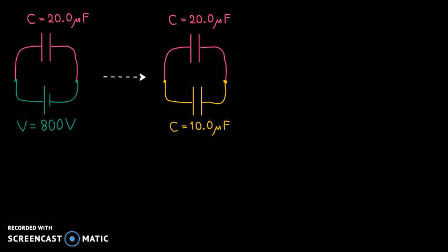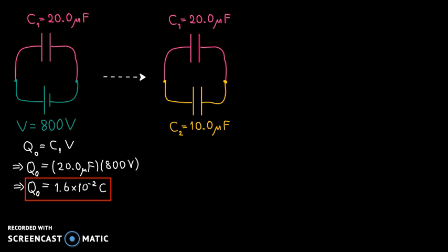First, we're going to calculate the total charge stored in the 20 microfarad capacitor originally when it was connected to the potential difference. I have labeled the two capacitance values as C1 and C2. C1 is the 20 microfarad one, and I'm going to call the original total charge stored in C1 as Q0. Q0 equals C1 times V. After substituting the numerical values, we get Q0 equals 1.6 times 10 to the negative second Coulombs.